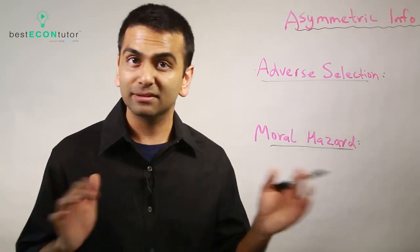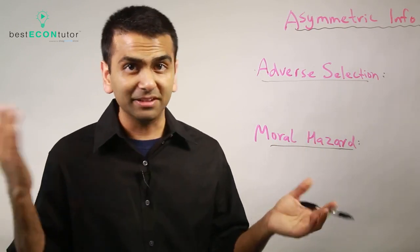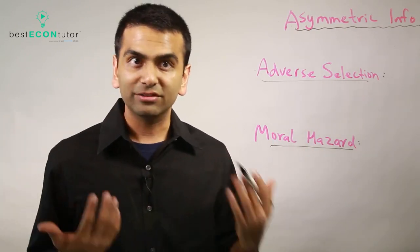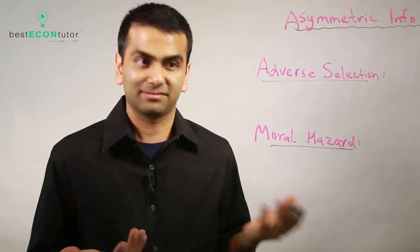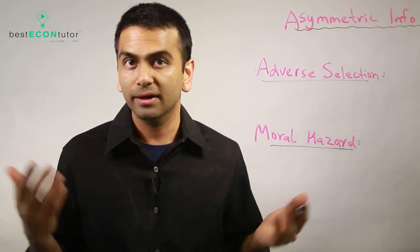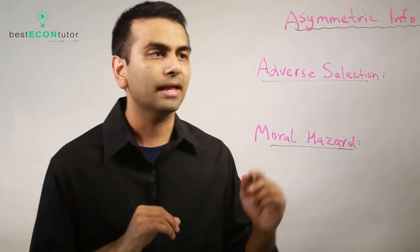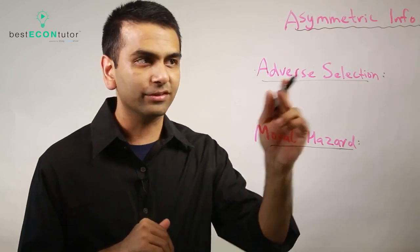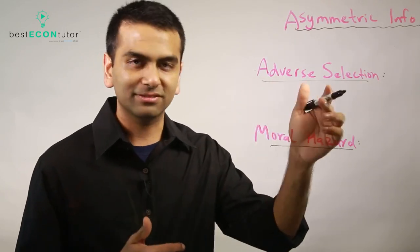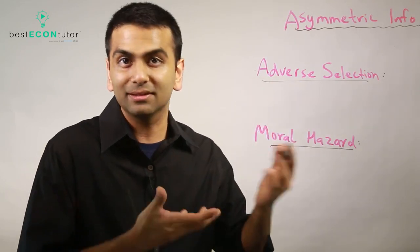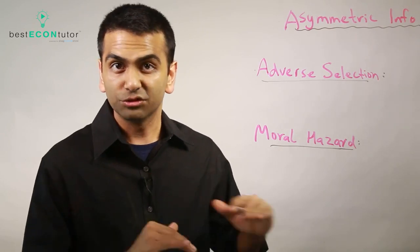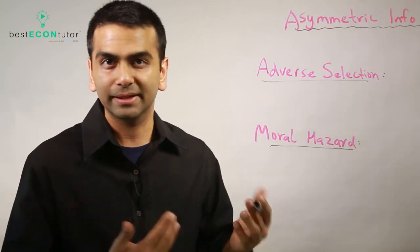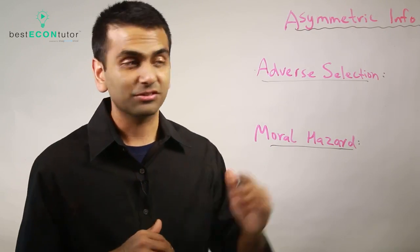If you overlooked that and assumed everybody's healthy and charged them the low premium, you'd actually be paying out more on average because some people are unhealthy, even though they lied. That's called adverse selection — 'adverse' just means bad. You selected bad people to get the healthy-person low premium, even though they're really unhealthy — that's when you made a bad decision.